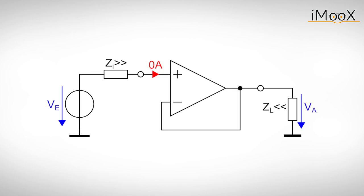This circuit is used as an impedance transformer for signal sources with high internal impedance ZI. The high input impedance of the voltage follower puts virtually no load on the signal source while offering a small output impedance to drive the connected load ZL.